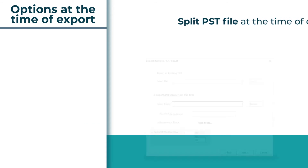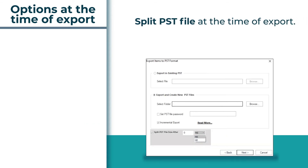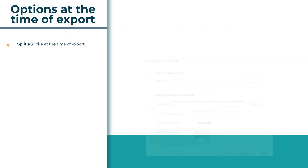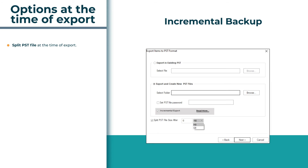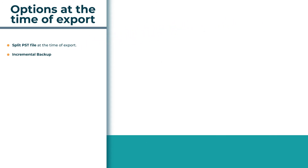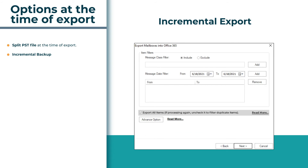You can split your resultant PST file by providing your desired file size limit at the time of export. The software provides an incremental backup option to prevent duplicate items while exporting in PST file format, and while exporting in Office 365 or live Exchange Server, use incremental export or export all items option to prevent duplicate items.